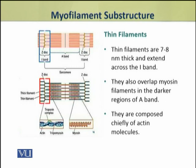Besides the I band, the thin filaments also overlap with the myosin filaments in the darker regions of the A band. So the I band has thin filaments, but these thin filaments also enter the A band where they overlap with myosin. However, in the central darker region of the A band, which is the H zone, these thin filaments are not found.